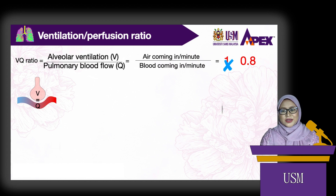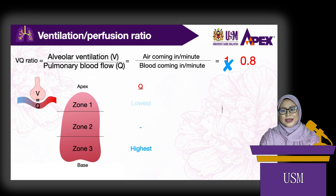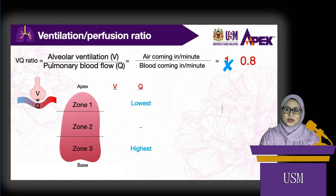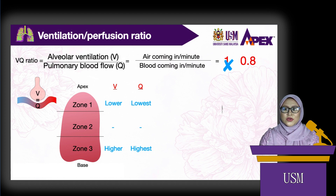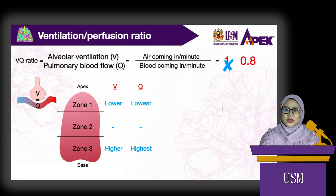The lungs can basically be divided into 3 zones. As we have learned, perfusion is highest at the base and lowest at the apex, due to gravitational effects. Similarly, ventilation is also higher at the base and lower at the apex. However, the regional variations in ventilation are not as great as regional variations in perfusion.